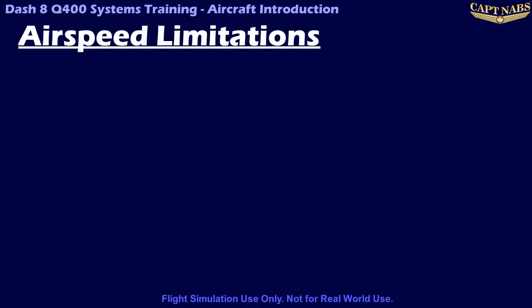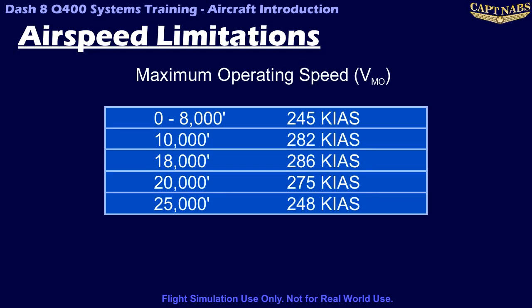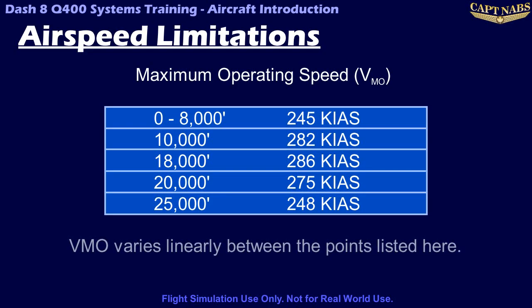The following are some airspeed limitations of the Q400. VMO, or the maximum operating speed, is the maximum speed at which the Q400 should be operated in flight. This is given as a table with a series of points, and VMO varies linearly between all these points. Fortunately, VMO is displayed on the airspeed indicator as a white and red tape that appears as VMO is approached, so the particular values do not need to be memorized.